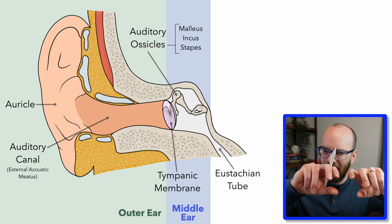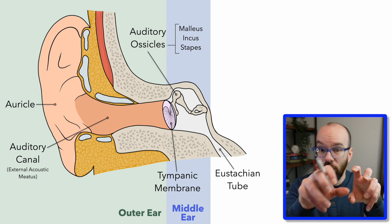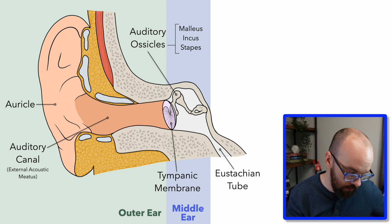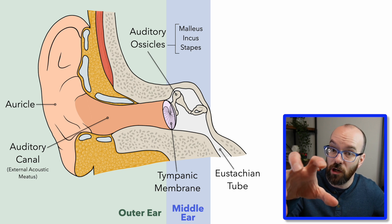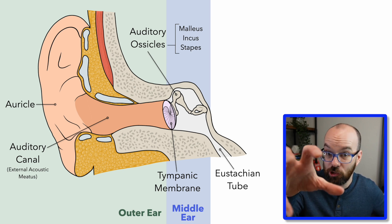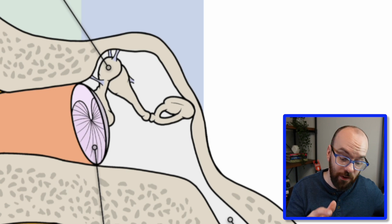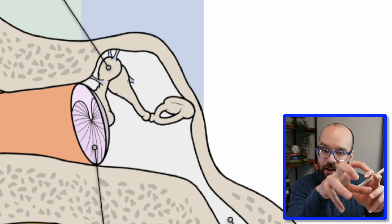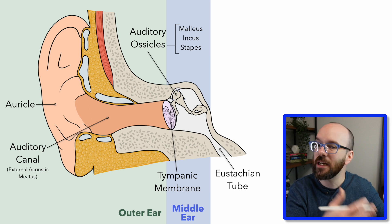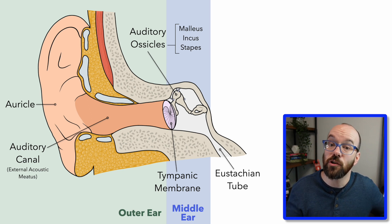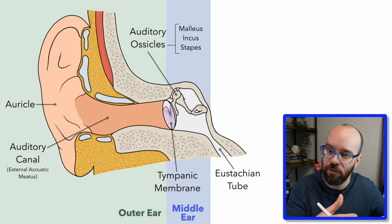The malleus, incus, and stapes look like they would bend relative to each other like a synovial joint, but they actually vibrate as one rigid structure. The malleus is connected to the tympanic membrane, so wherever the tympanic membrane vibrates, that causes all three bones to vibrate together. They're held in place by suspensory ligaments that allow them to rock around a particular axis. The auditory ossicles also function to amplify the vibrations — the vibrations from the big tympanic membrane get focused onto a much smaller section, making them stronger.